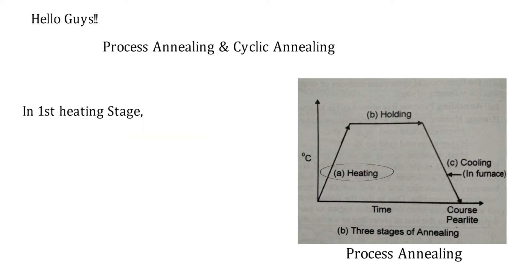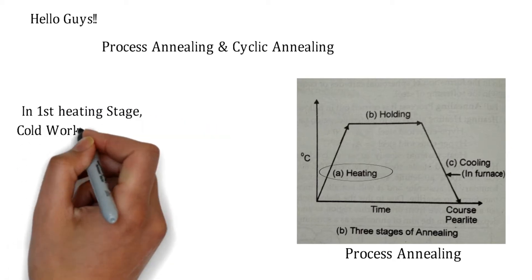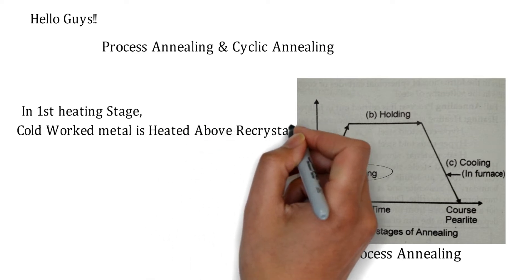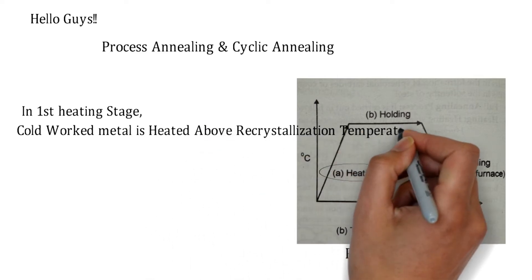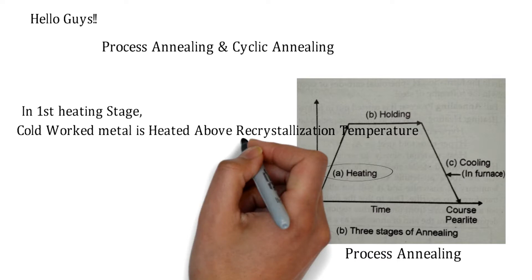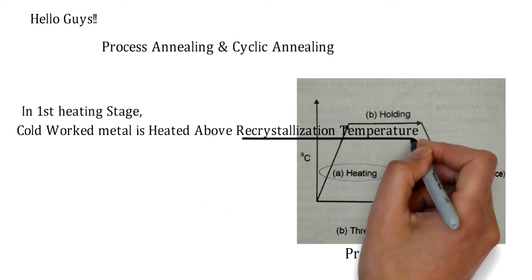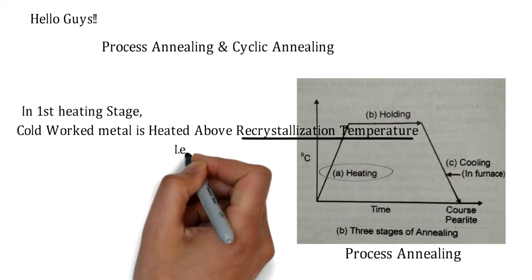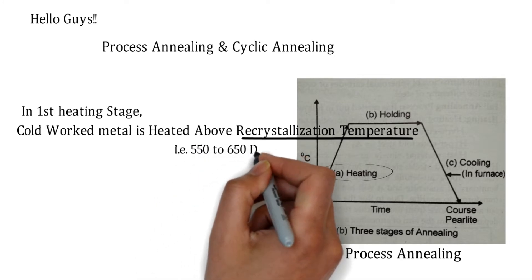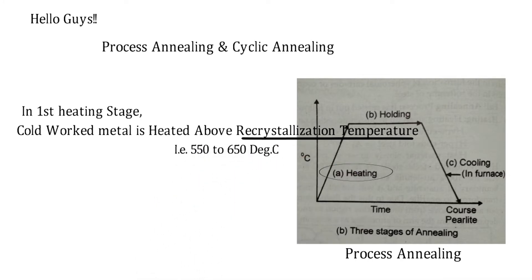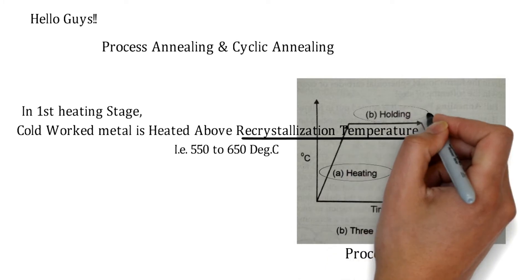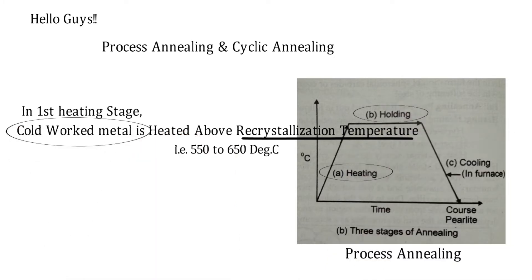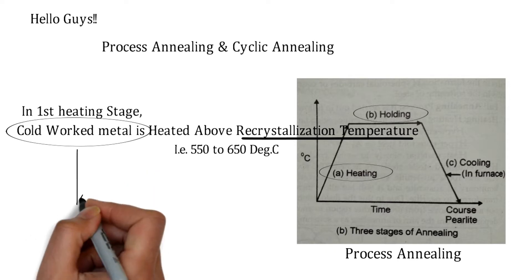In the first heating stage, the cold worked metal is heated above the recrystallization temperature. Recrystallization temperature is a very important keyword here — it will be around 550 to 650 degrees Celsius.